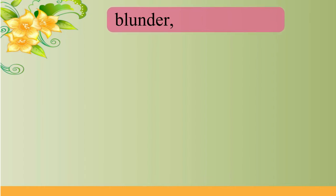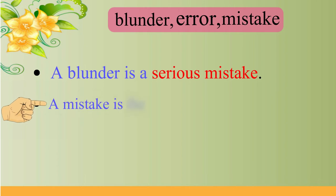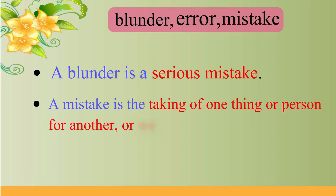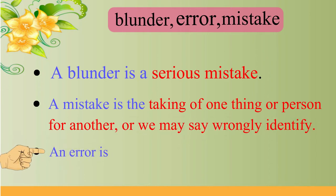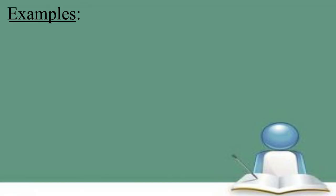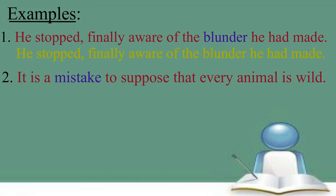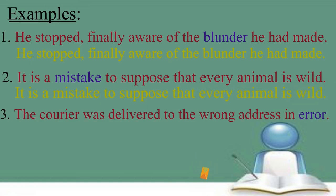The next set of words also needs to be used very carefully: blunder, error and mistake. A blunder is a serious mistake. A mistake is the taking of one thing or person for another, or wrongly identifying. An error is a deviation from what is right or correct. He stopped, finally aware of the blunder he had made. It is a mistake to suppose that every animal is wild. The courier was delivered to the wrong address in error.